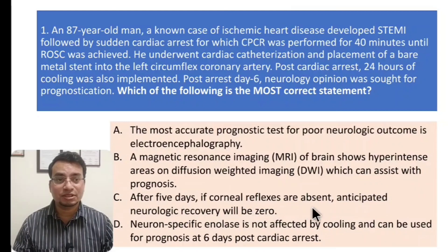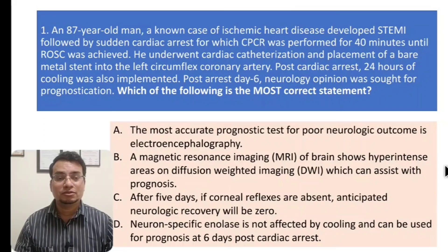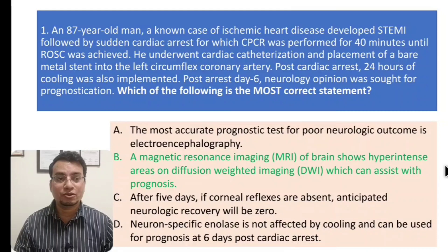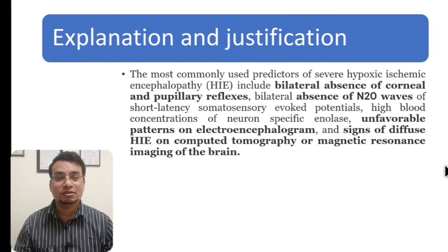Which of the following is the most correct statement? A) The most accurate prognostic test for poor neurological outcome is encephalopathy. B) MRI of brain shows hyperintense areas on diffusion-weighted imaging which can assist with prognosis. C) After five days, if corneal reflexes are absent, anticipated neurological recovery will be zero. D) Neuron-specific enolase is not affected by cooling and can be used for prognosis at day six post cardiac arrest. The most accurate statement is B.